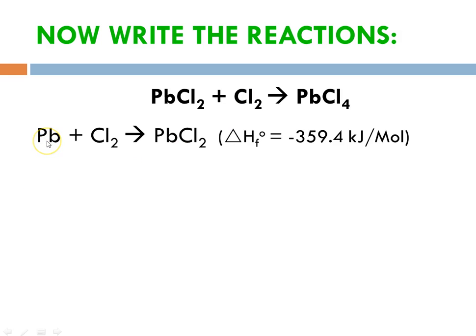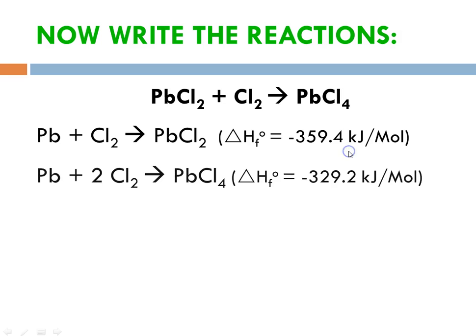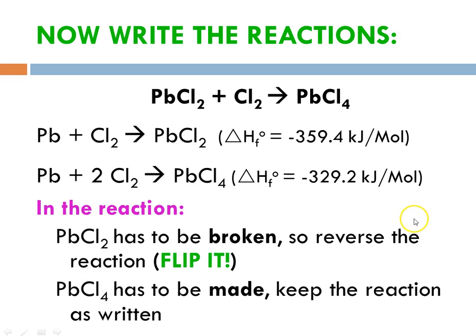Lead(II) chloride comes from lead plus chlorine, and there's the delta H of formation that we looked up in a table. Lead(IV) chloride comes from lead and 2 chlorine molecules, and again, there's the delta H we had looked up. In the reaction, lead(II) chloride has to be broken — the bonds have to be broken — so we're going to have to reverse this reaction because it's on the reactant side. We just flip or invert it, giving us lead(II) chloride on the reactant side. Lead(IV) chloride has to be made and we can keep it just as written.